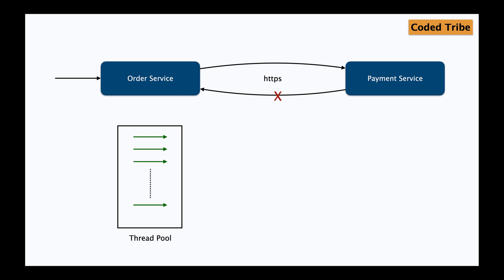Now let's say the payment service is down and is not able to serve any more requests, but the order service does not know that. So whenever a new request comes into the order service, it will assign a thread, and that thread will go to the payment service but will not get a response back. That thread will be occupied and will be waiting for the response from the payment service. Likewise, for any subsequent request, those threads will again get queued up and occupied waiting for the payment service.